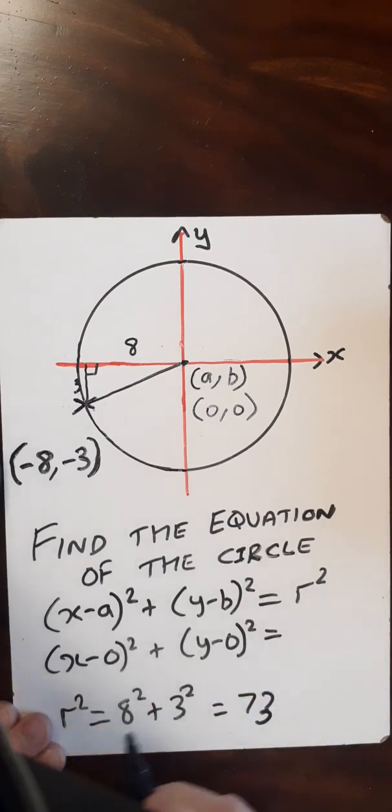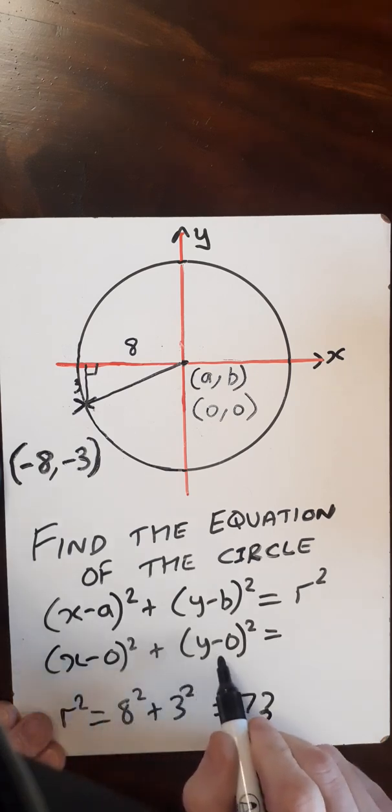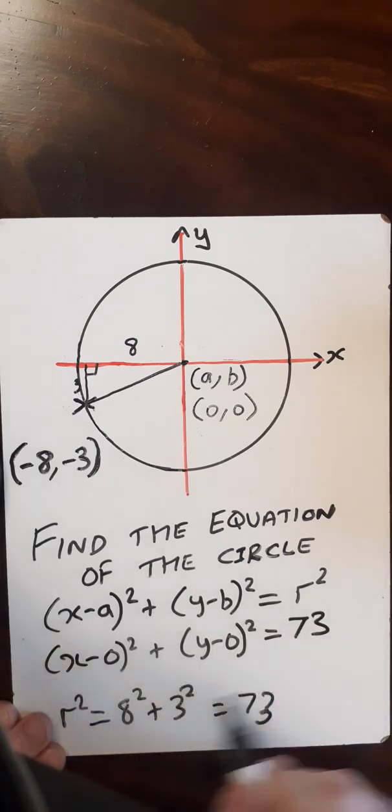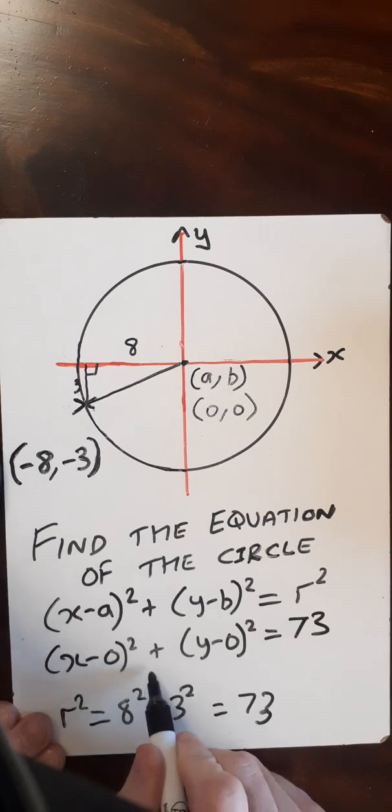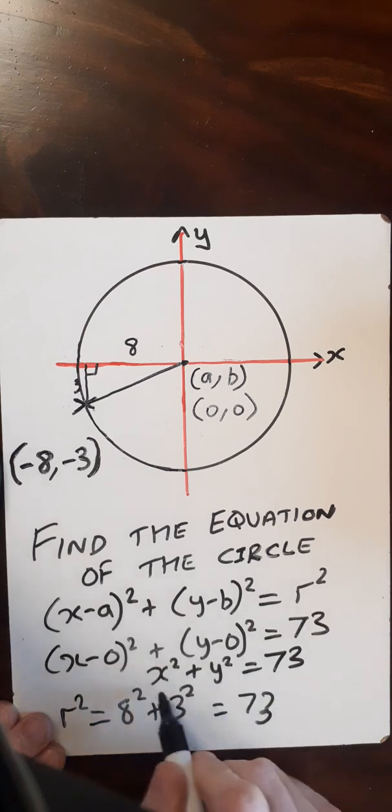So therefore, I can complete this by saying (x-0)² + (y-0)² = 73. And just simplify that off a little bit. I can say x² + y² = 73.